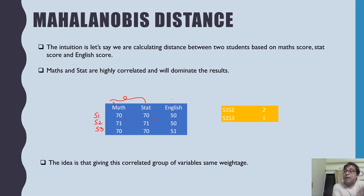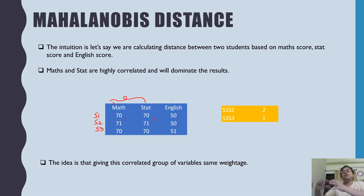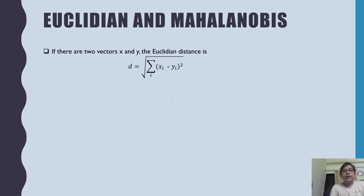In Euclidean distance, you are giving 33% weightage to maths and 33% to stats, resulting in 66–67% combined weightage, while English gets only 33%. If you use Mahalanobis distance, maths and stats together get a weightage of 50% and English gets 50%. The Euclidean distance formula can be written as the sum of (xi − yi) squared over all n features.